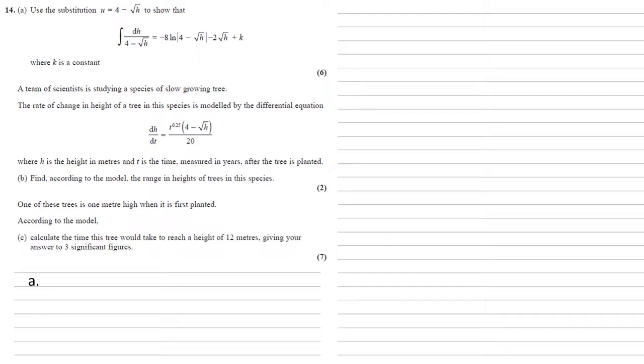Use the substitution u equals 4 minus root h to show that the integral of 1 over 4 minus root h with respect to h equals minus 8 log natural 4 minus root h minus 2 root h plus k, where k is a constant. So we're letting u equal 4 minus root h.